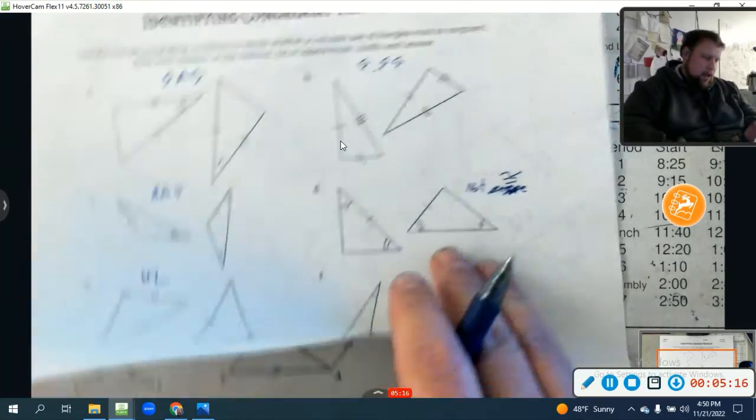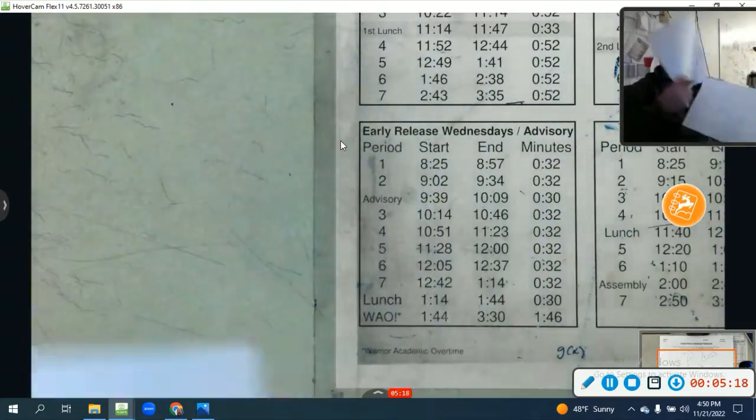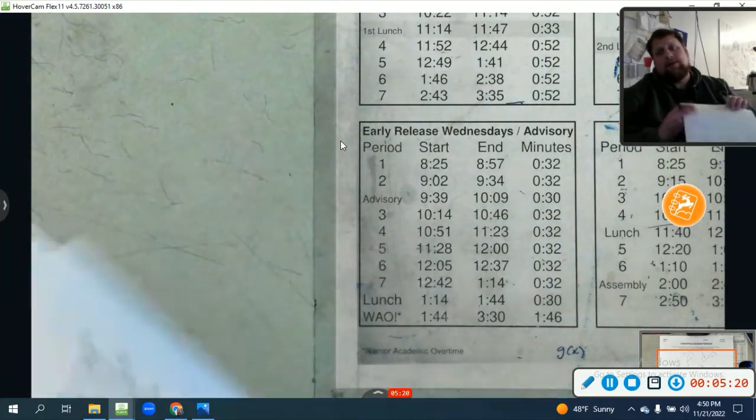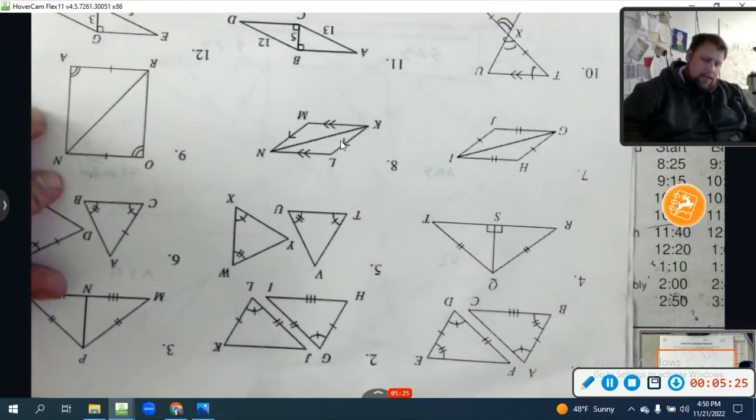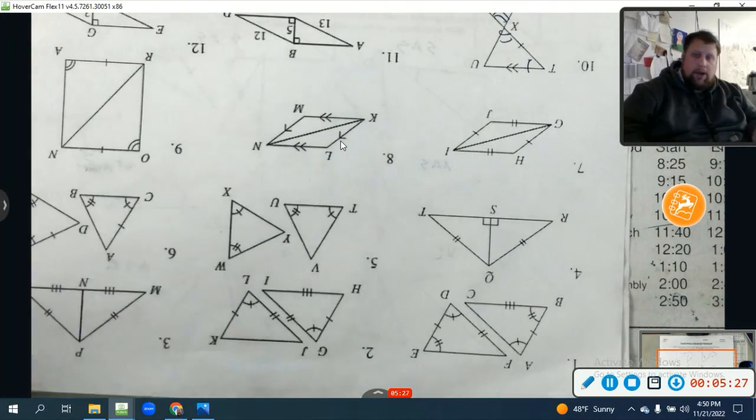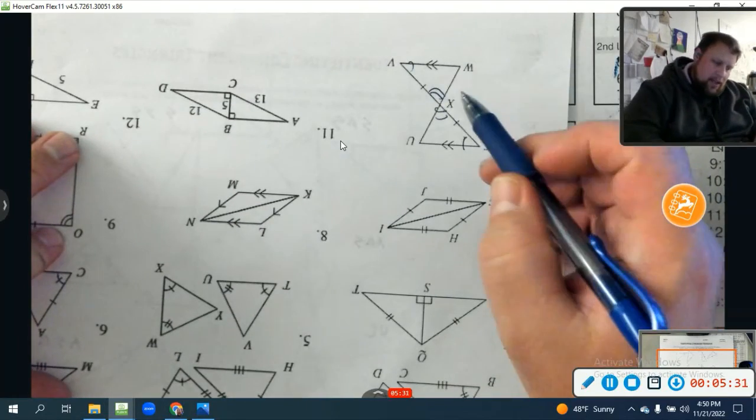All right. You guys are going to go through. You actually have 30 more. If you do all 30 of them, I will give you 10 points of extra credit. So I want to encourage you guys. Now, I do want to talk about some of these are not necessarily congruent. If it doesn't match exactly, we can't say they're congruent. But I did want to look at this one right here.